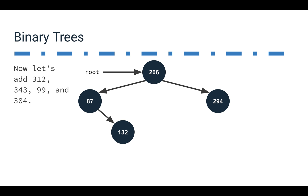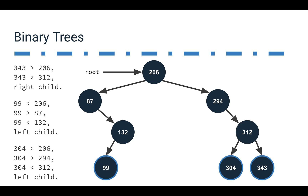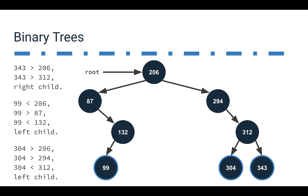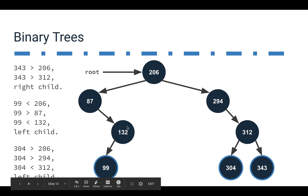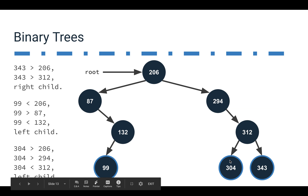Adding a few more values: 312 is larger than 206 and larger than 294, so it becomes 294's right child. Then 343 is larger than 206, larger than 294, and larger than 312, so it becomes 312's right child. For 99: it's less than 206, so we go left; it's larger than 87, so we go right; and it's less than 132, so it becomes 132's left child. For 304: it's larger than 206, larger than 294, and less than 312, so it becomes 312's left child.